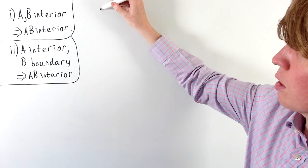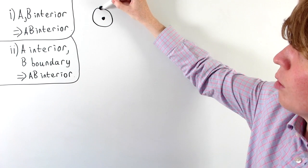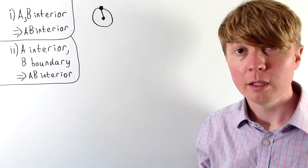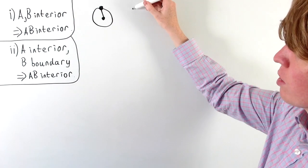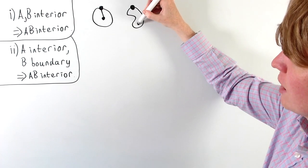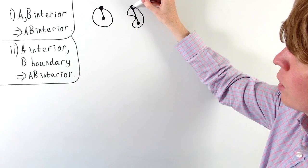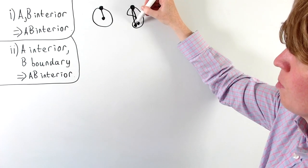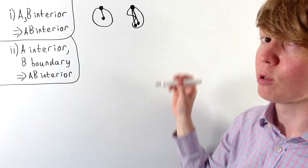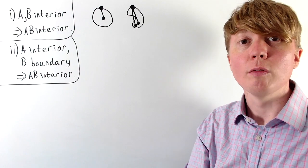We can imagine this intuitively: everything between your boundary point and your interior point is going to be interior. With a non-convex set, you could have a boundary point in between them, or even some exterior points and multiple boundary points between an interior and boundary point. So this is really a property of convex sets.